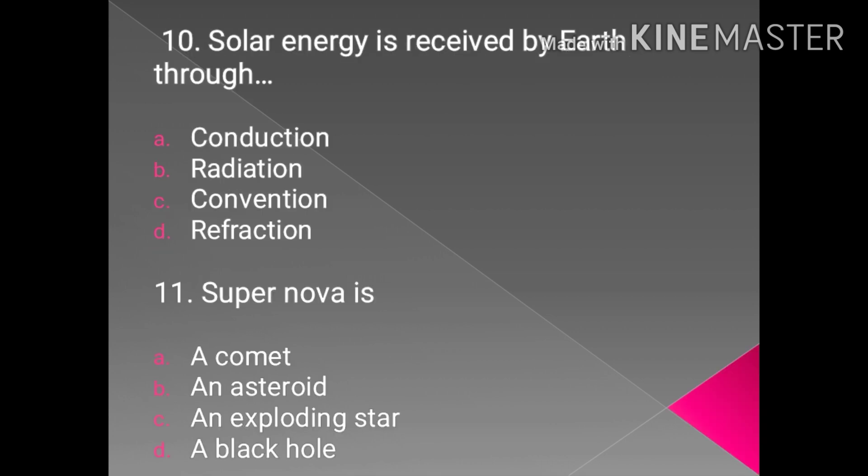The next question which is very repeatedly asked in the examinations is: solar energy is received by Earth through... The correct answer is radiation. Why radiation? What is radiation? Radiation is a process in which energetic particles or energetic waves travel through vacuum or through matter containing media that are not required for their propagation.